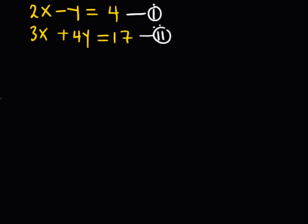So we have 2x minus y, everything is equal to 4. Now I'm going to make y the subject of x. So I'm going to take y to the right-hand side and then 4 to the left-hand side.